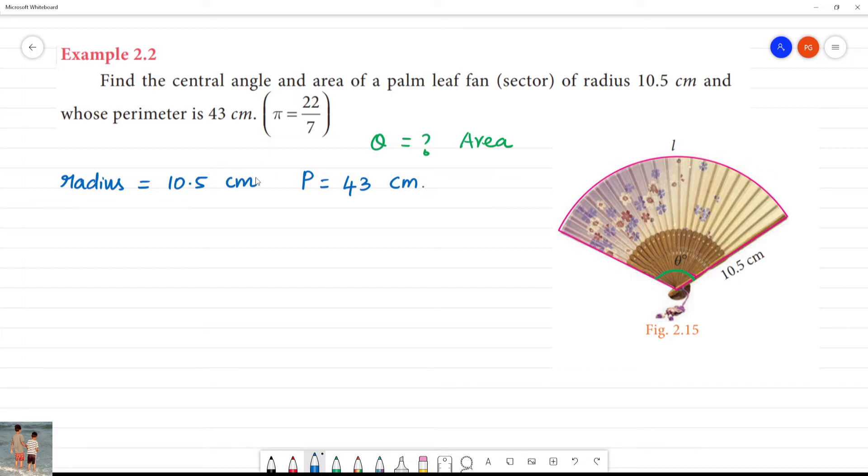First, perimeter. Perimeter of the sector: this is radius, this is r, this is r. This is the length. This is the perimeter. So r plus r is 2r. This is the length of the arc.